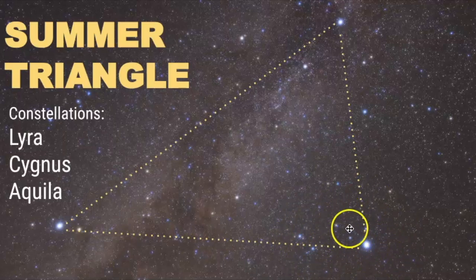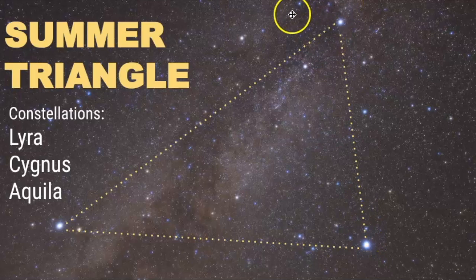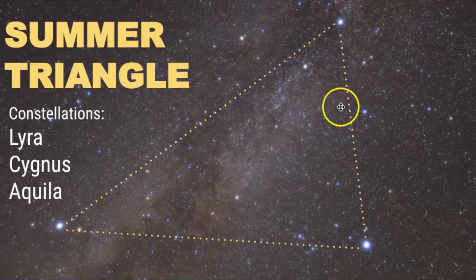Lyra is right down here. Notice the parallelogram shape and the bright star Vega. We have Cygnus right here, it makes this big cross in the sky, and then Aquila is down here. You're only seeing a portion of Aquila.